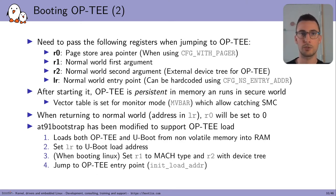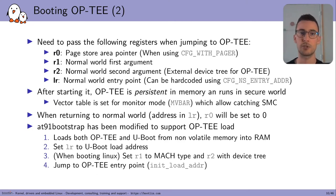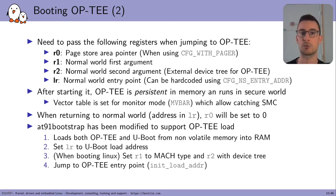In order to have this boot procedure in AT91Bootstrap, we modified it to support OP-TEE loading. First, it will load both OP-TEE and U-Boot from non-volatile memory into RAM. Then it will set the link register to the U-Boot load address. Finally, it will jump to the OP-TEE entry point located at its load address. When booting Linux, it will also set R1 to the machine type and R2 to the device tree.